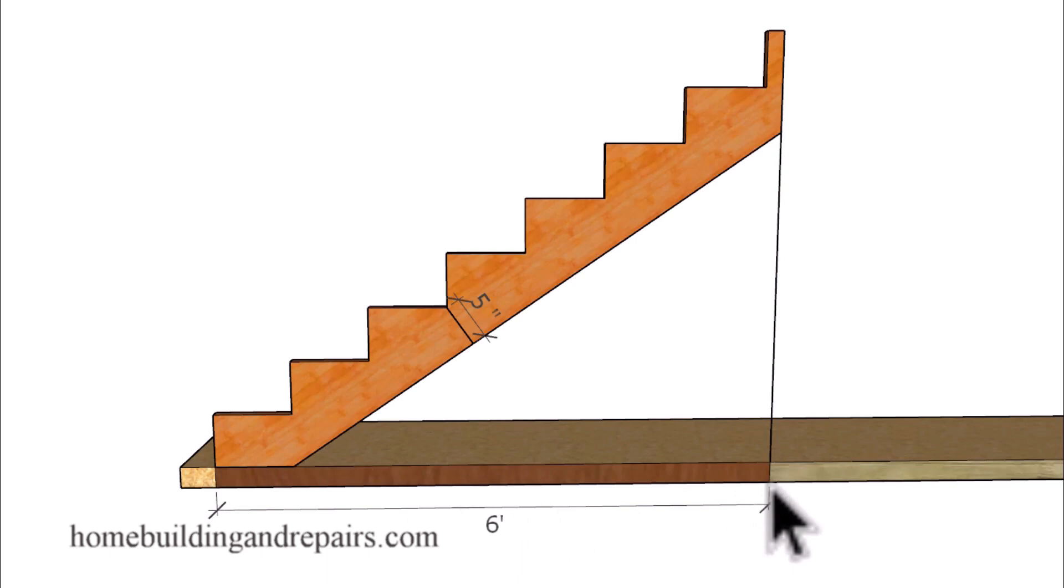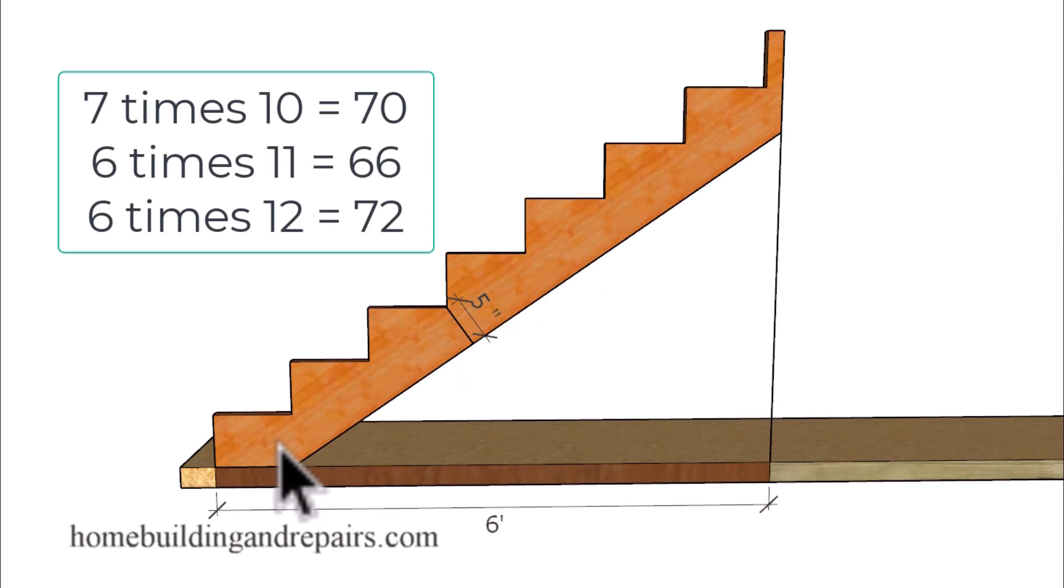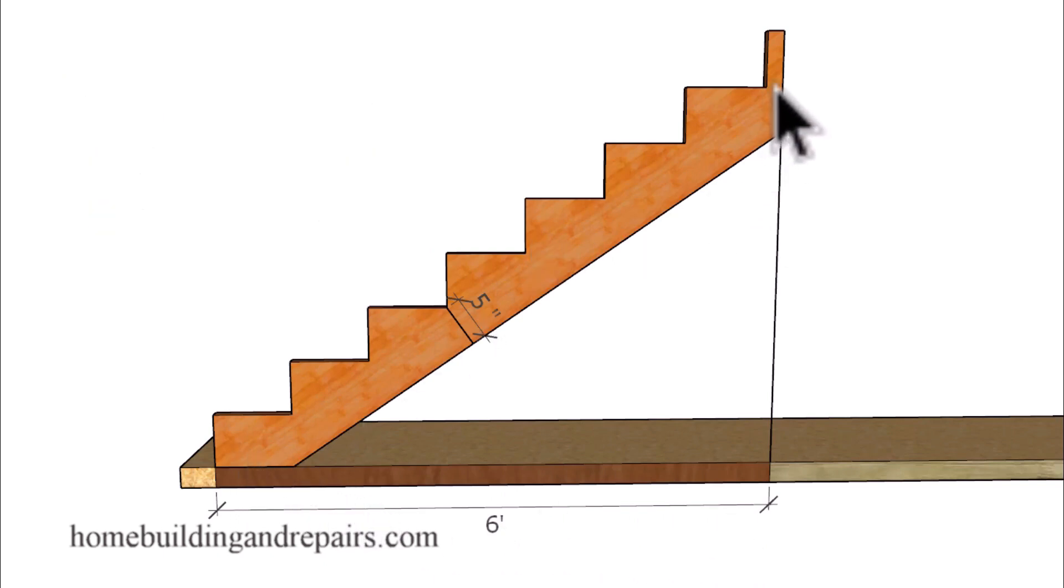I think the easiest formula for you would be to have no more than seven 10 inch steps or six 11 inch steps or six 12 inch steps. You can do the math on that. Six times 11 is 66. Six times 12, 72 or six feet right on the money. And seven times 10 is 70 making it less than 72 inches. So it will work if it's less than. It won't work if it's more than.